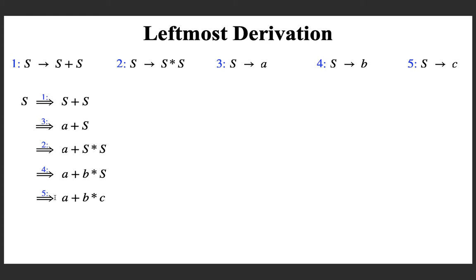If you recall how you replace the non-terminals: initially you had only one non-terminal, so you applied a production for that. This capital S is replaced by the RHS of the production. Now if you look at this string, which is a sentential form - because sentential form means any string derived from the start symbol - there are two non-terminals, both are capital S. So you can apply a production for the first S or the second S. But what I did is: if there are more than one non-terminals in the current string, I opted to select the leftmost non-terminal for replacement.